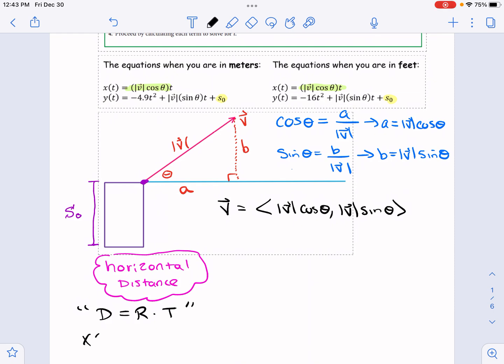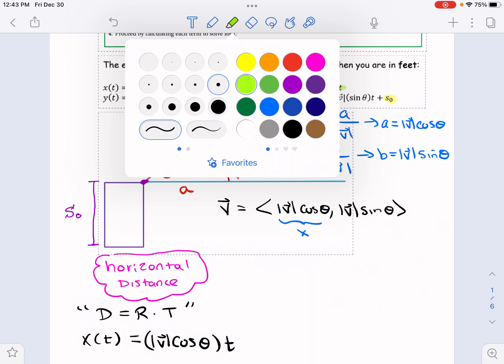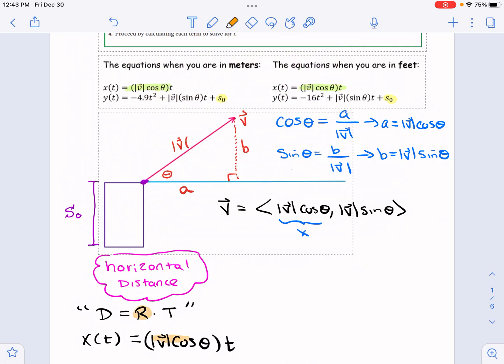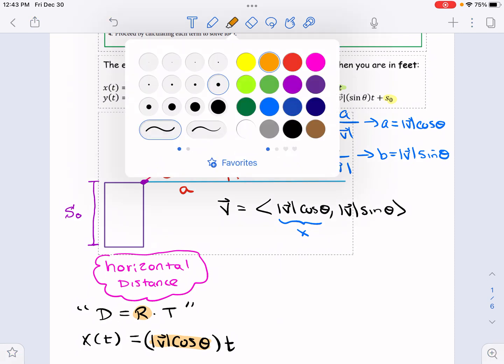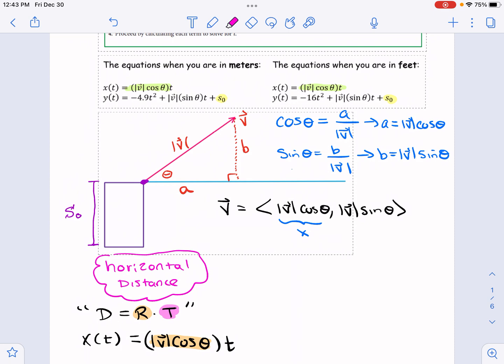So X of T, your horizontal distance, is your rate. Now, your rate is the X component. This is your rate here, the X component of your velocity vector. So it's X of T equals, now your rate is the magnitude times cosine theta times T. So your rate here is that, whatever that number ends up being. And your time is your time and your distance is, okay? Straight up, distance equals rate times time. So your horizontal distance is pretty straightforward.